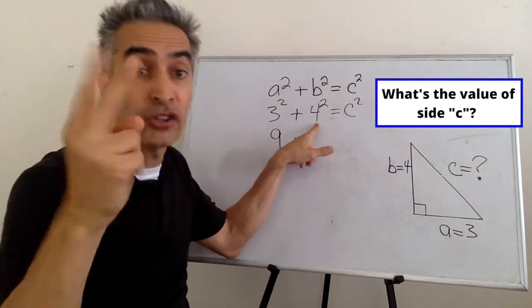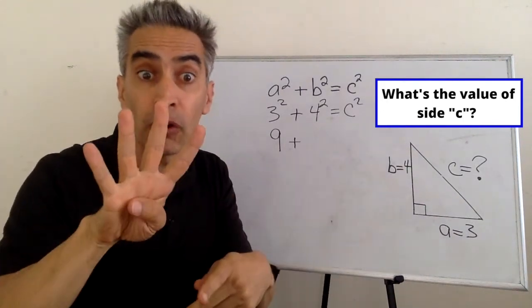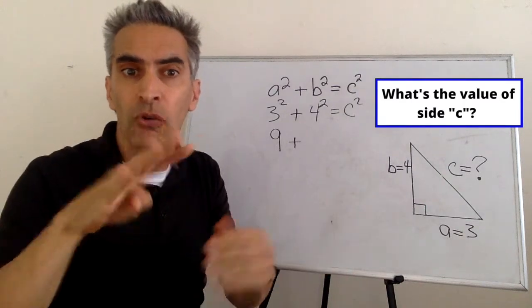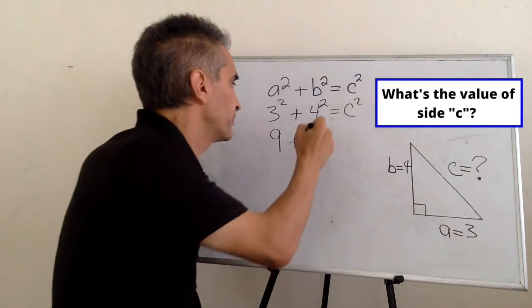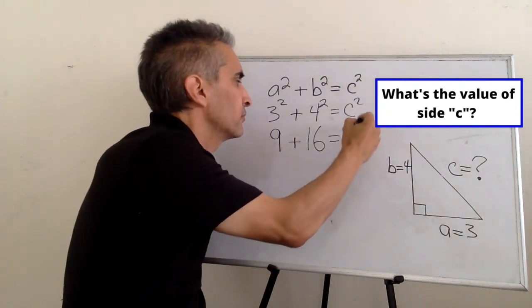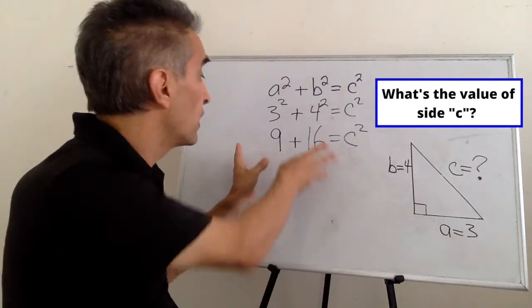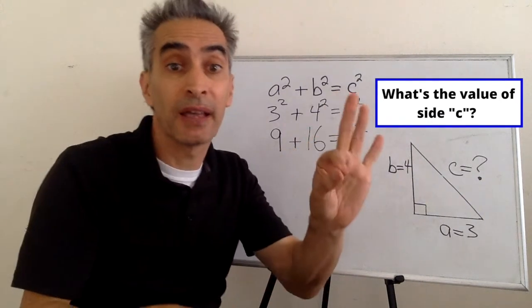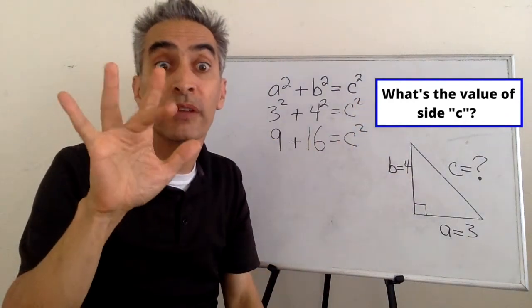Next, 4 squared. 4 squared means 4 times 4. 4 times 4 equals 16. Next, what are we going to do? We add up 9 and 16. 9 plus 16 equals 25.